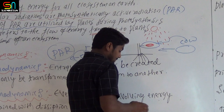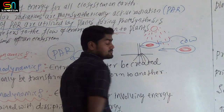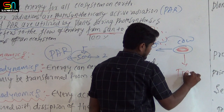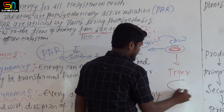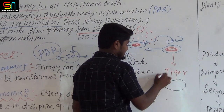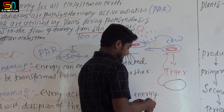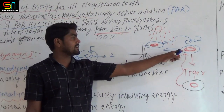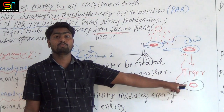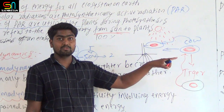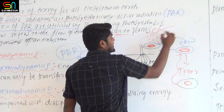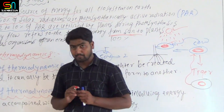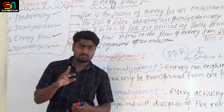The plant body has energy stored in it. Energy flow refers to the flow of energy from sun to land plants to various organisms of that ecosystem — that is the energy flow.